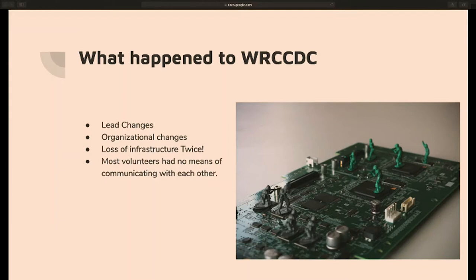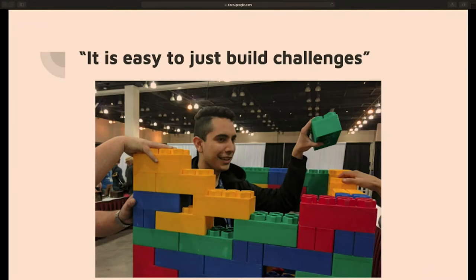It's very easy to build things that are very broken, but it doesn't help teams learn or build new skills. Two years ago, the WRCCDC organization lost its leads. It went through quite a bit of environment changes, including total loss of all the infrastructure twice — the build systems, the tools, the previous years of virtual machines and competition material, all gone. So what do you do when that happens and you still have a competition to put together? You build things really quickly and try to figure out what people are going to like.